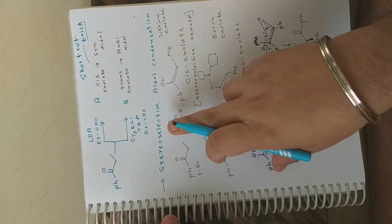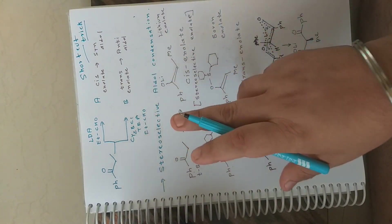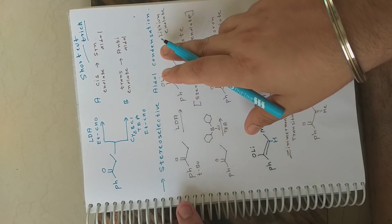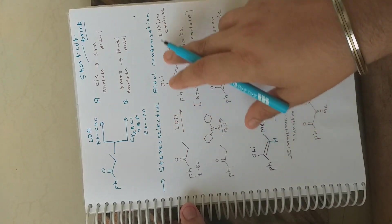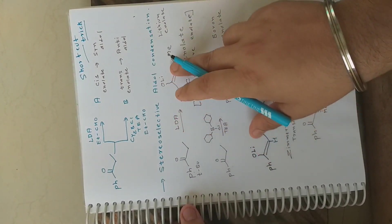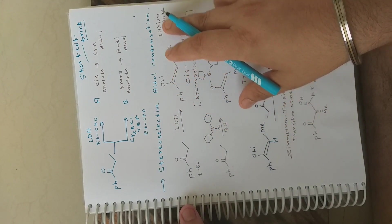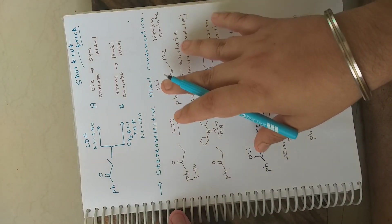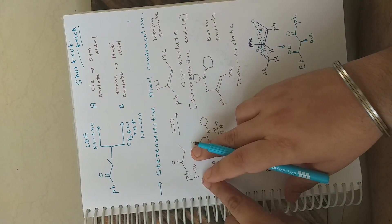This is stereoselective, meaning we get two products. This is not asymmetric synthesis — asymmetric aldol is different from stereoselective aldol. In stereoselective we get two diastereomers, whereas in asymmetric synthesis you get only one enantiomer or diastereomer.